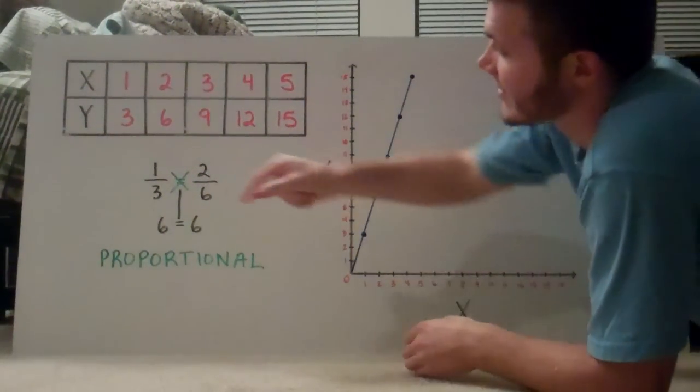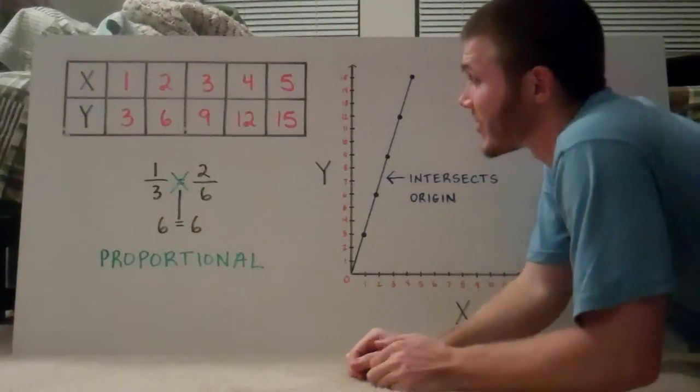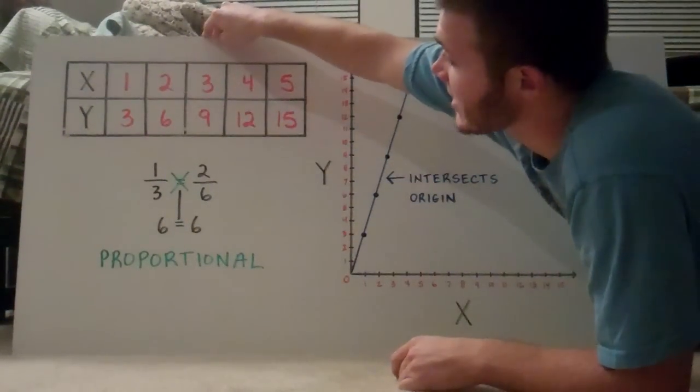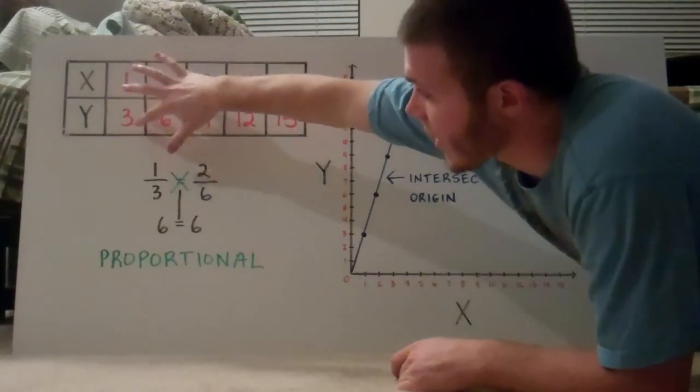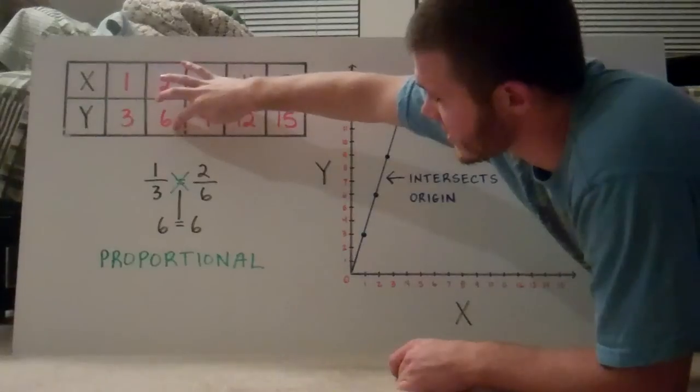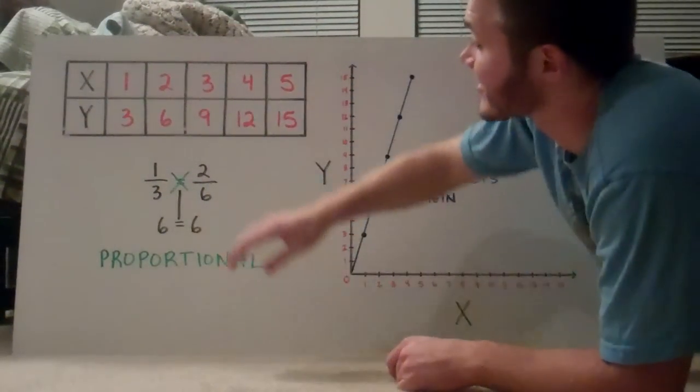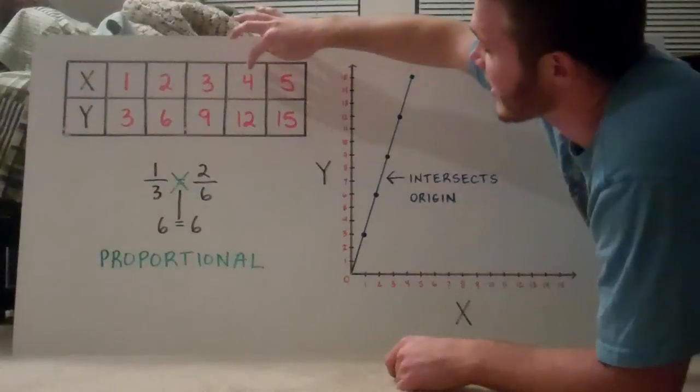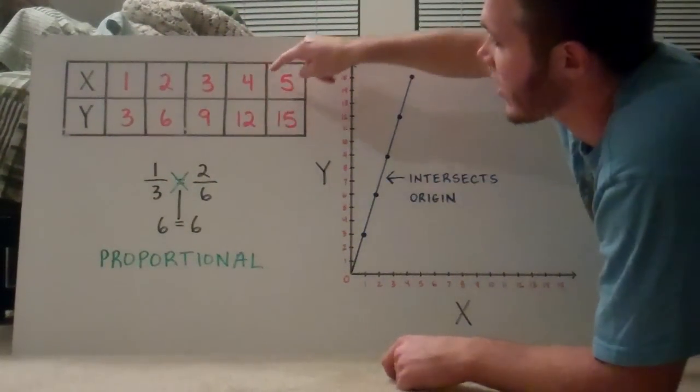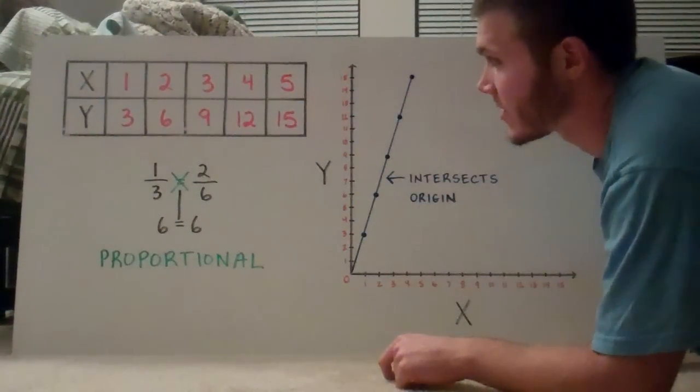Last slide. Now I got X and Y. So for this table, when X is 1, Y is 3. When X is 2, Y is 6. When X is 3, Y is 9. When X is 4, Y is 12. And then 5 and 15.